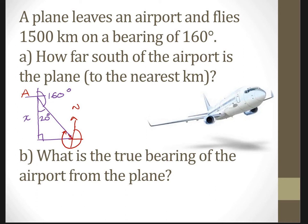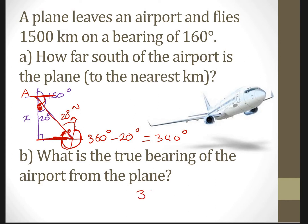There are two ways to do it, but the easiest way — because this is 20 degrees, this is also 20 degrees. If you think about it, these are alternate angles, the Z-angle. So this angle and this angle here are the same, which is 20 degrees. Therefore, the bearing from here to here — this angle — is 360 minus 20, because the whole revolution is 360. So 340 degrees. Therefore, the bearing of the airport from the plane is 340 degrees.